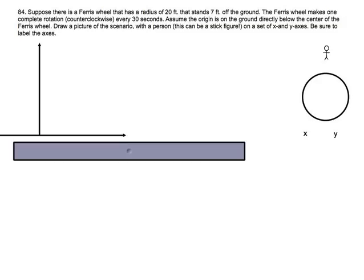Suppose there is a Ferris wheel that has a radius of 20 meters that stands 7 meters off the ground. The Ferris wheel makes one complete rotation counterclockwise every 30 seconds.